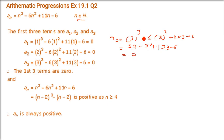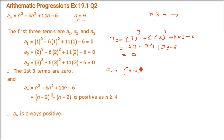Now for the other part — all terms after the third should be positive. When n ≥ 4, aₙ should be positive. We can see a formula embedded in aₙ = n³ - 6n² + 11n - 6, which is (n-2)³ - (n-2). Let me show you how.